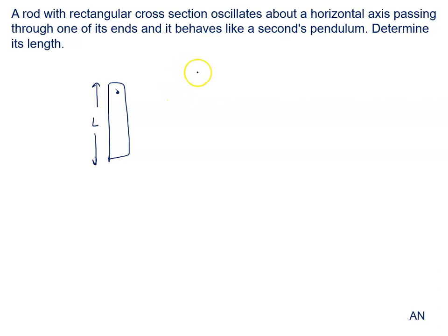To get the expression for the time period of the compound pendulum we know T is given by 2π root I upon mgL.